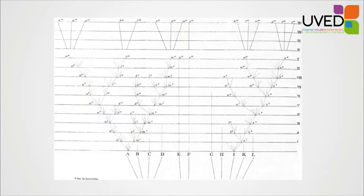In Darwin's drawing, every lineage at every time produces new forms, and most of the new forms become extinct. But some will remain, especially the ones that are further apart — because by being further apart, competition is reduced.